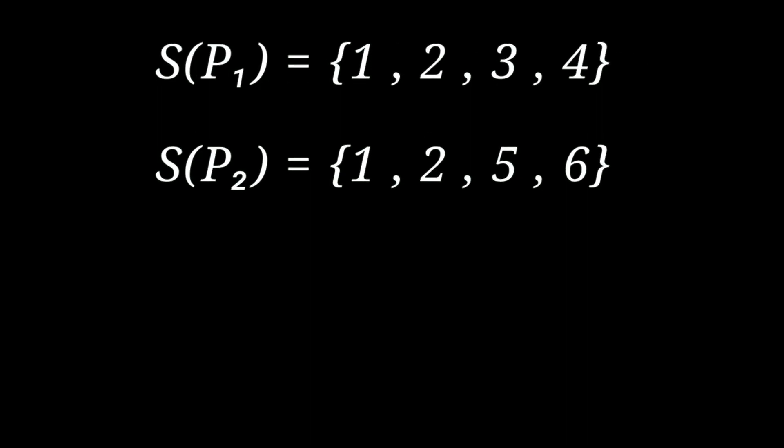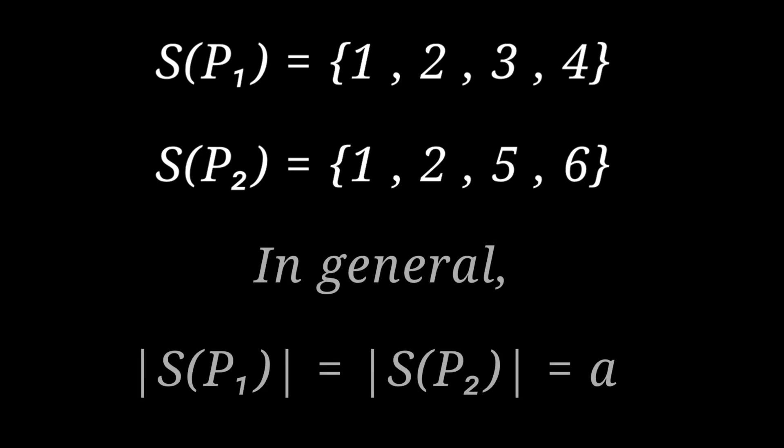Using the property from before that p1 and p2 have the same number of 1s in their coordinates, we can say that the number of elements in S(p1) and the number of elements in S(p2) must be the same. Let's call this number of elements a.